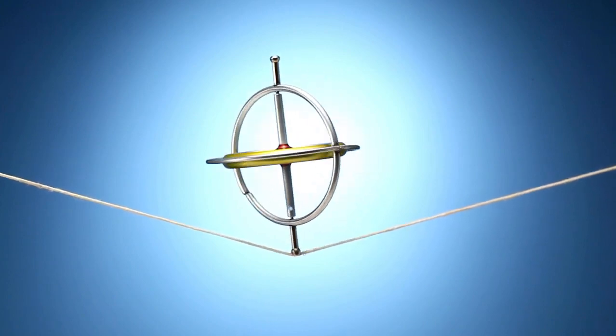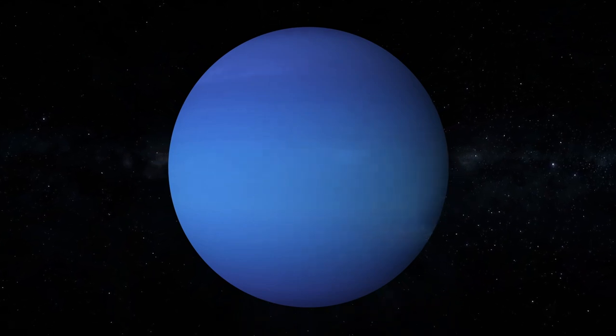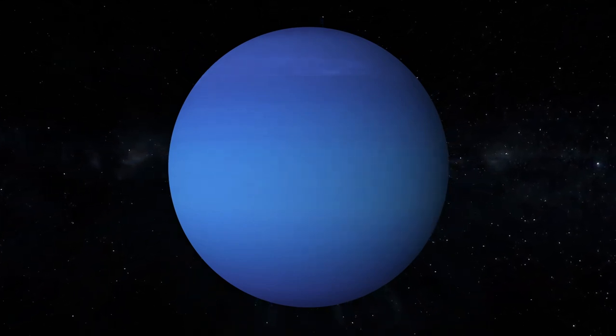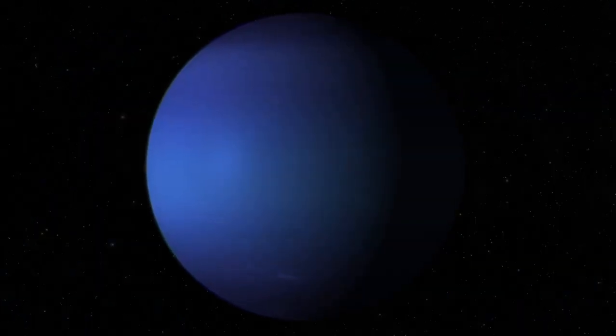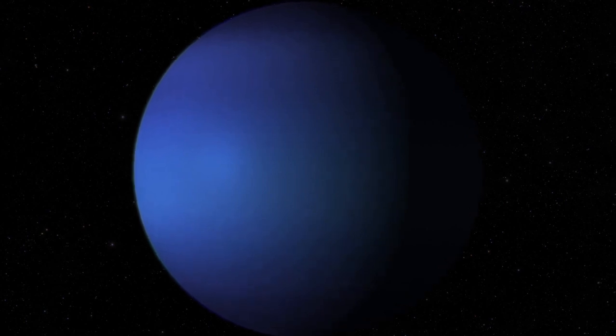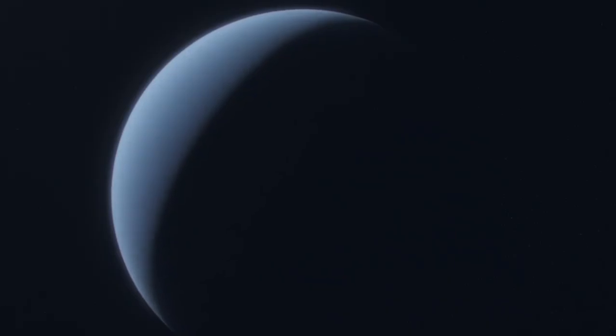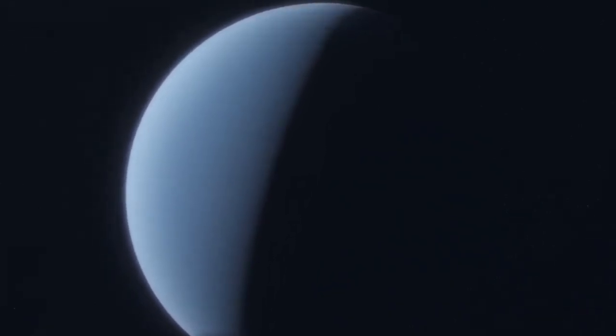Imagine being able to witness such a planet up close, with its raging storms and blistering heat. In addition to gas giants, there are also Neptunian or Neptunian exoplanets, which have sizes similar to Uranus and Neptune. Among these are the hot Neptunes and mini-Neptunes, which are smaller and closer to their host stars than their gas giant cousins. These planets are often shrouded in mystery, with their atmospheres being difficult to study from afar.